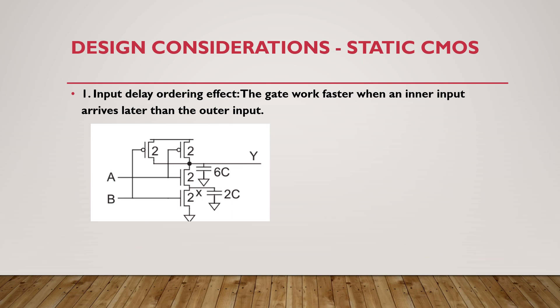Last class we saw what is input delay ordering effect. That means the gate will work faster when an inner input arrives later than the outer input. Here input A is the inner input and B is the outer input, because the outer input is connected very close to the power rail such as VDD or ground, whereas the inner input is very close to the output. So when this input arrives later than the outer input, our gate will work faster.